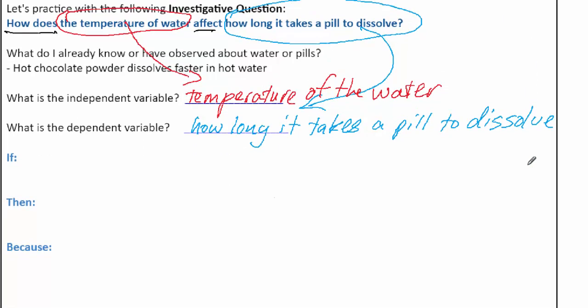That is also true in our hypothesis. So we're going to take this independent variable, in this case, the temperature of water, and we can rephrase that. We can just call it water temperature. And we can write about it here in the if statement. If the water temperature.